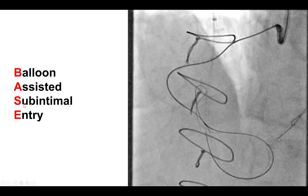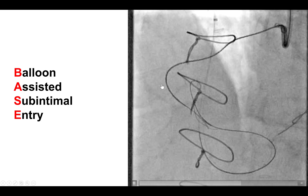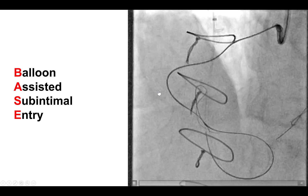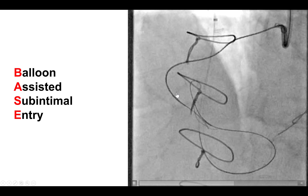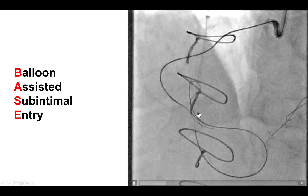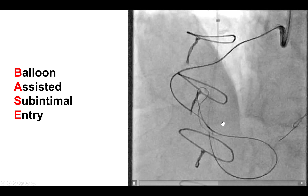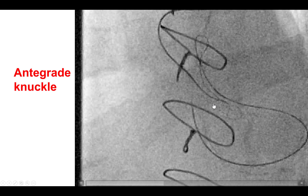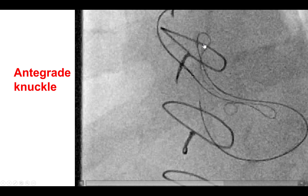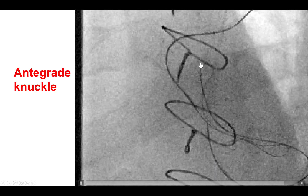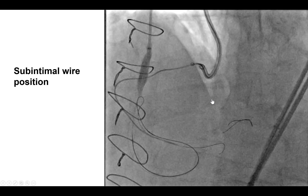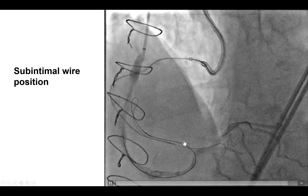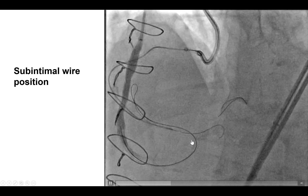Using a dissection strategy, the move-the-cap strategy was the way to go. We did the balloon-assisted sub-intimal entry, or BASE. We inflated a balloon proximal to the proximal cap, creating dissection, and then advanced a polymer-jacketed wire through the dissection. You can see now that the wire is tracking, and distally it is overlapping with the retrograde equipment. This is the antegrade knuckle — a fairly large knuckle. We can see clearly that the retrograde gear has gone in the wrong direction. We now have overlapping of the equipment distally of both the antegrade and retrograde guide wire.